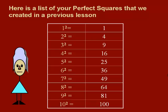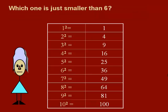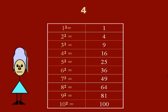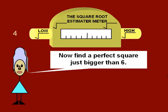Find a perfect square that is just smaller than 6. That's right, 4. So now we know that the square root of 6 has to be greater than the square root of 4.